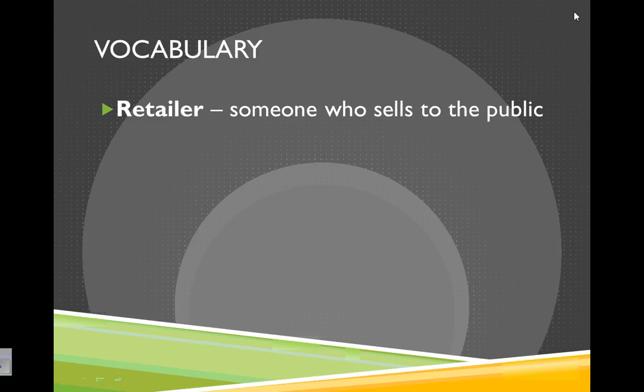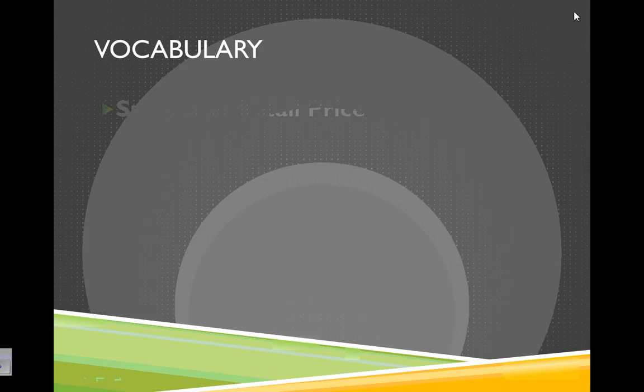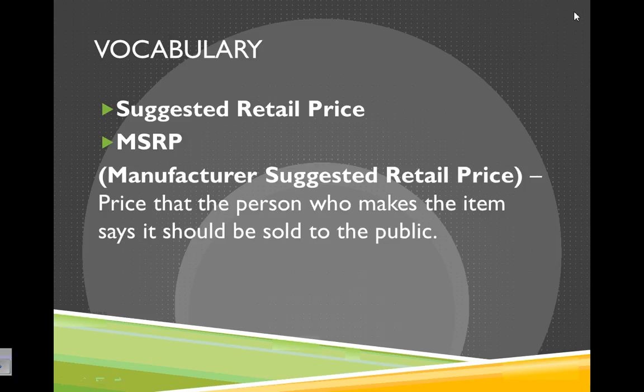A retailer is someone who sells to the public — any kind of store that actually sells things to the public. A retail price is the price that the public pays. Also, the suggested retail price — you may have heard of MSRP, which is the manufacturer's suggested retail price. That's a price that the person who makes the item says it should be sold to the public. We'll look more into that in the next stages when we look at the manufacturer and who these retailers are actually buying from.